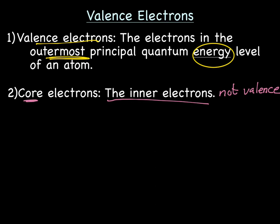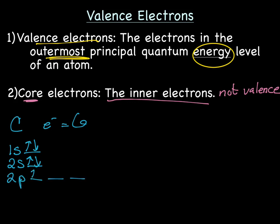Let's try a quick example. We'll start with carbon. Carbon has how many electrons? It has six electrons. So our orbital diagram is going to have 1s with two electrons, 2s with two electrons, and 2p with two electrons. If we were to write the electron configuration it would be 1s², 2s², 2p².